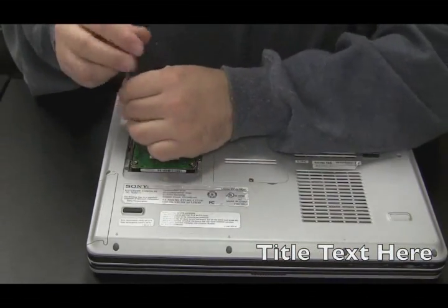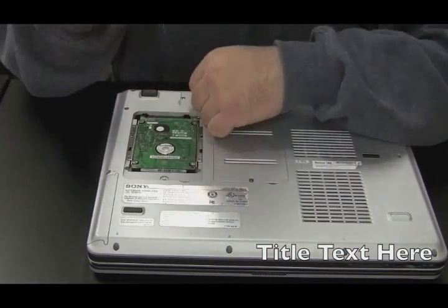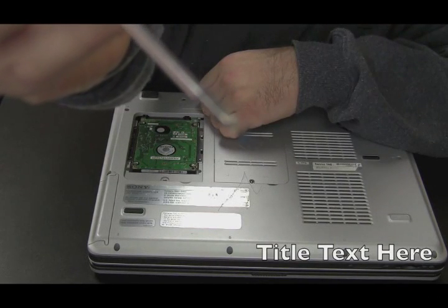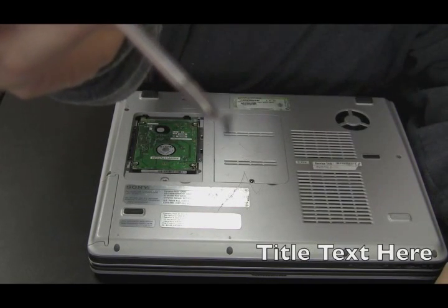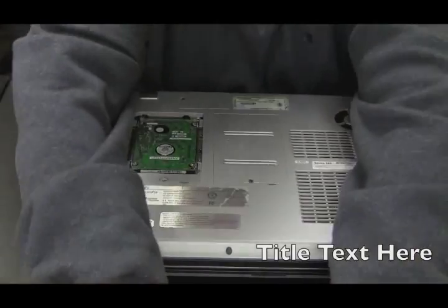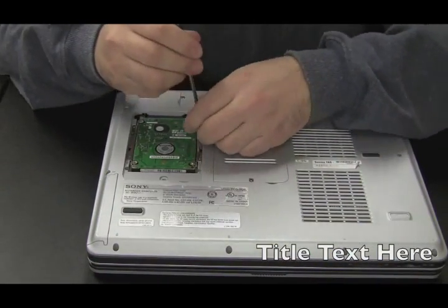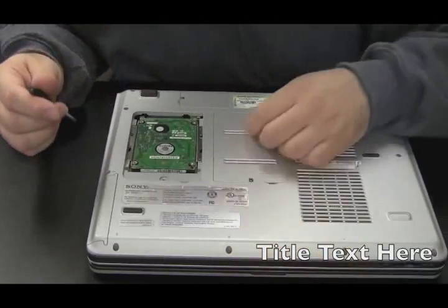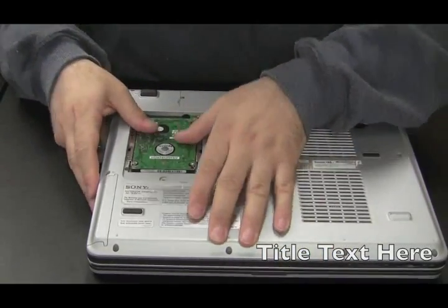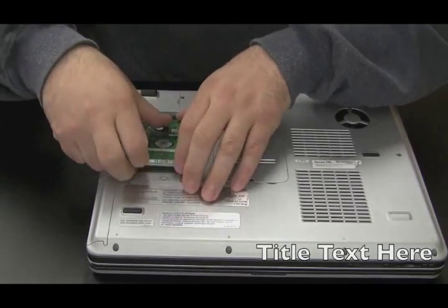You see I just dropped that screw there. That's why it's smart to get a magnetic tip on your screwdriver. You can't really see that. This way you can get your screws out and catch them if they go astray. And the hard drive slides out and pops out.